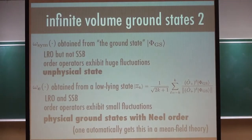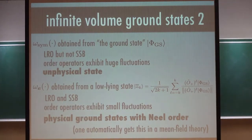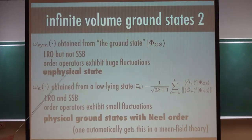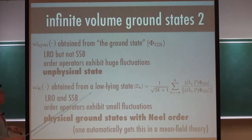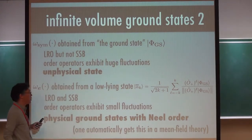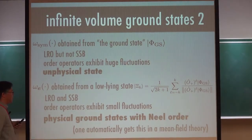What are the properties of these states? First, omega-sim is obtained from the ground state we learn in class — it corresponds to the lowest energy eigenstate. It has a long-range order but no spontaneous symmetry breaking, and it has a huge fluctuation in other operators. So we should conclude that this is an unphysical state. And omega-E, obtained from the low-lying state, is not the ground state for finite volume, but it exhibits very nice properties — we should regard this as the physical state.